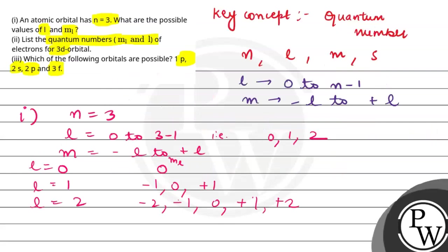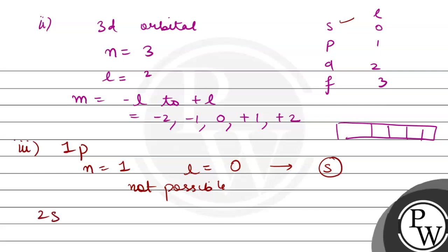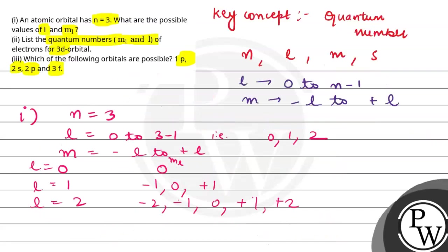Second, we have 2s and 2p. So if we look at them, 2s has n value 2. So what is l value? 0 and 1. So 0 is s and 1 is p. This means 2s is possible and 2p is also possible.